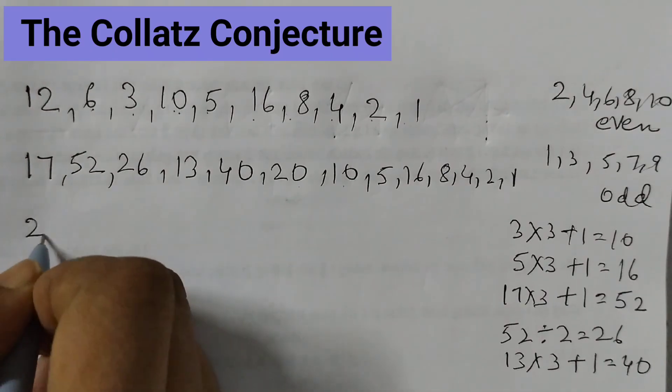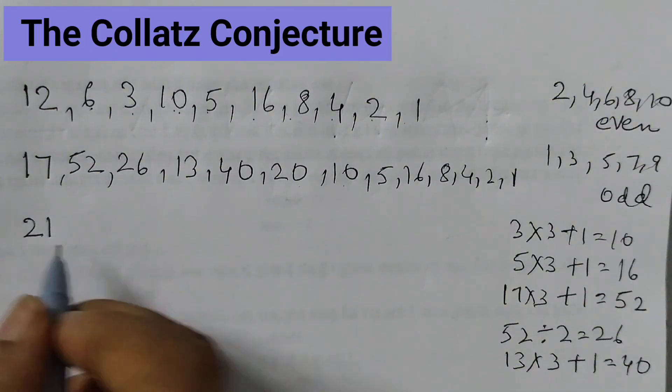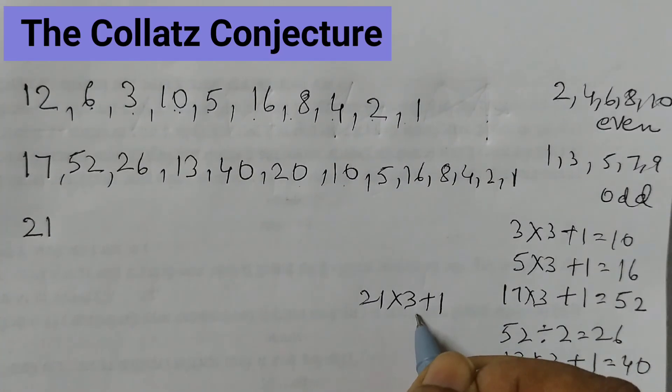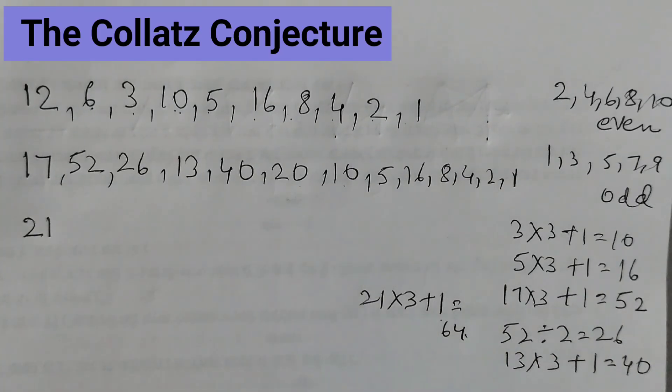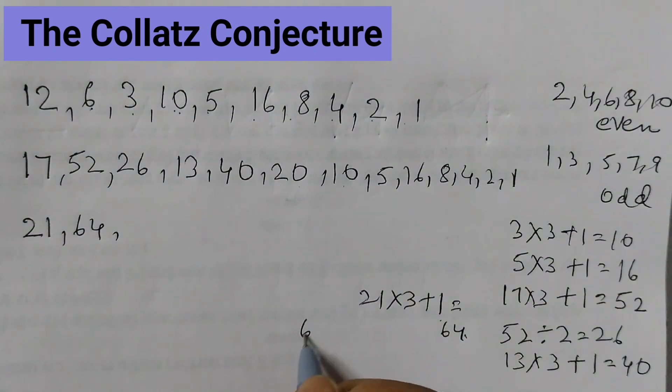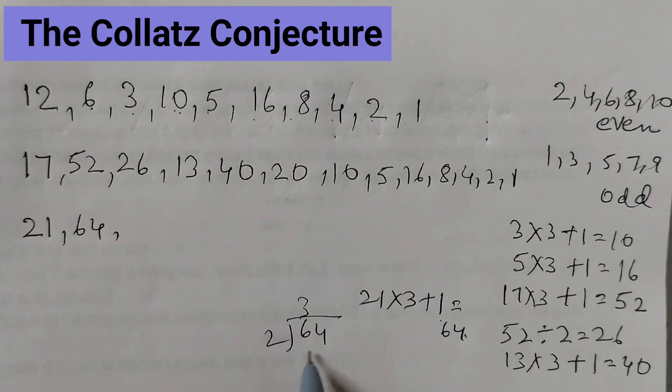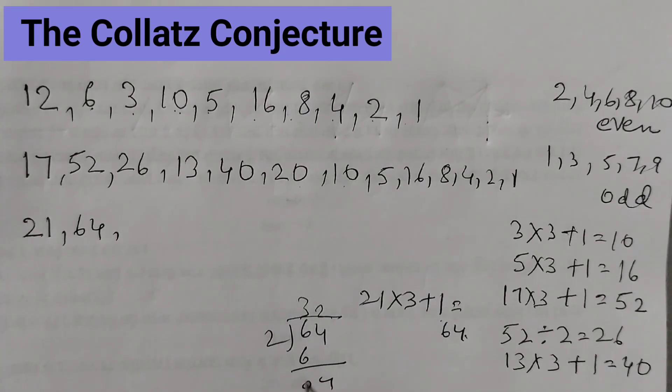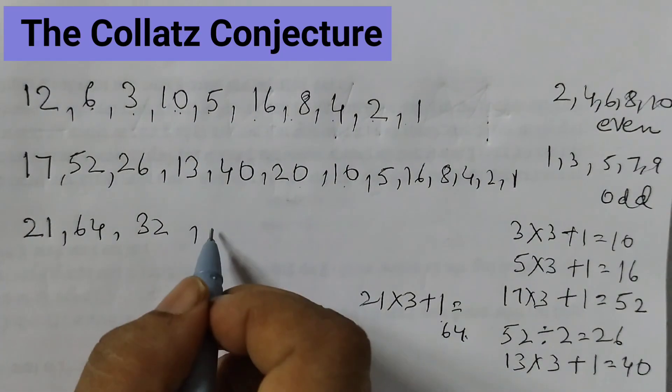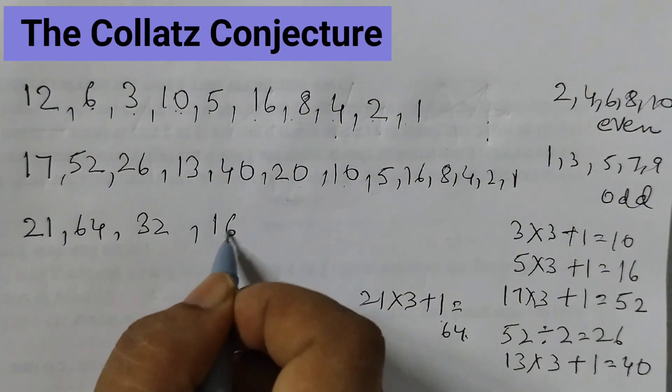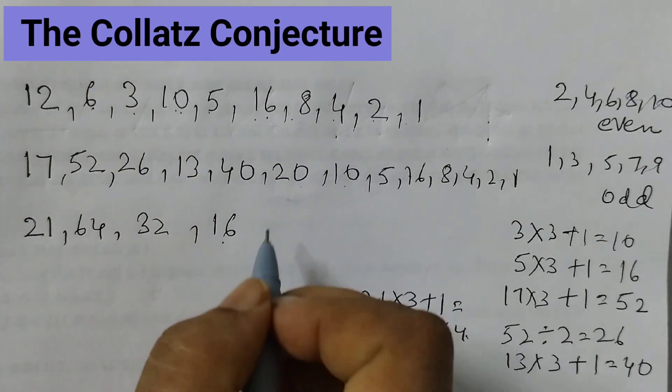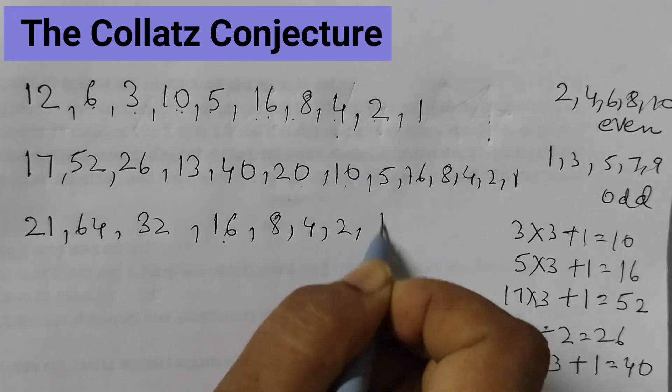The next example is 21. Odd number, so multiply by 3. So 21 times 3 plus 1, so that would be equal to 64. 64 divided by 2, 3 times 2 is 6, 2 times 2 is 4. So 32. 32 even number, divide by 2, that will be 16. We can see here 16. That means the rest of the pattern would be 8, 4, 2, 1.